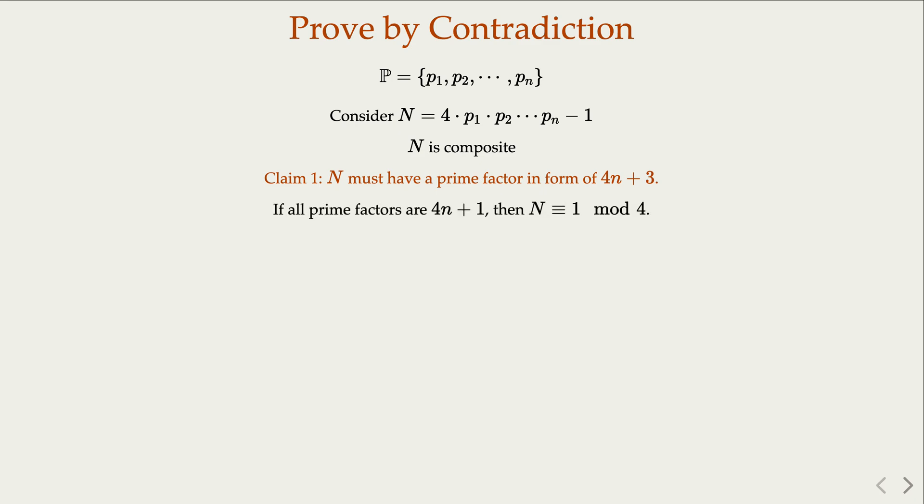If you multiply all of them together, there must be also 4m plus 1. So in other words, N must be 4m plus 1. That is a contradiction because we have shown that N mod 4 is 3. So N is in the form of 4m plus 3. So Claim 1 says that N must have at least one factor that is in the form of 4m plus 3.